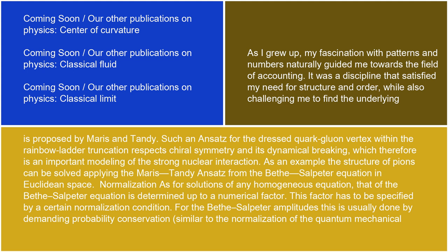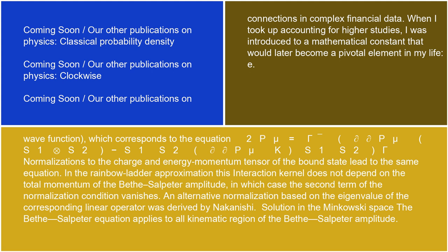Normalization: as for solutions of any homogeneous equation, that of the Bethe-Salpeter equation is determined up to a numerical factor. This factor has to be specified by a certain normalization condition. For the Bethe-Salpeter amplitudes, this is usually done by demanding probability conservation, similar to the normalization of the quantum mechanical wave function, which corresponds to the equation: 2P^μ = Γ̄ · (∂/∂P^μ)(S₁ ⊗ S₂) − S₁S₂ · (∂/∂P^μ)K · S₁S₂ · Γ. Normalizations to the charge and energy-momentum tensor of the bound state lead to the same equation. In the rainbow-ladder approximation, the interaction kernel does not depend on the total momentum of the Bethe-Salpeter amplitude, in which case the second term of the normalization condition vanishes. An alternative normalization, based on the eigenvalue of the corresponding linear operator, was derived by Nakanishi.